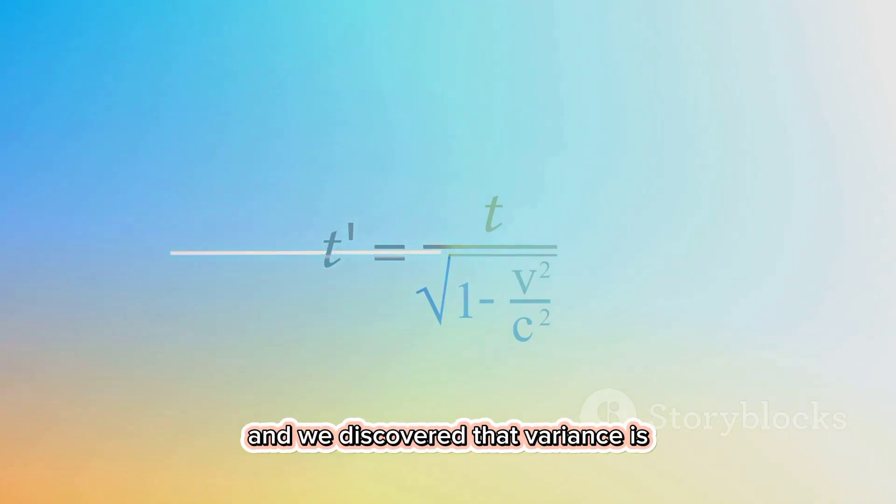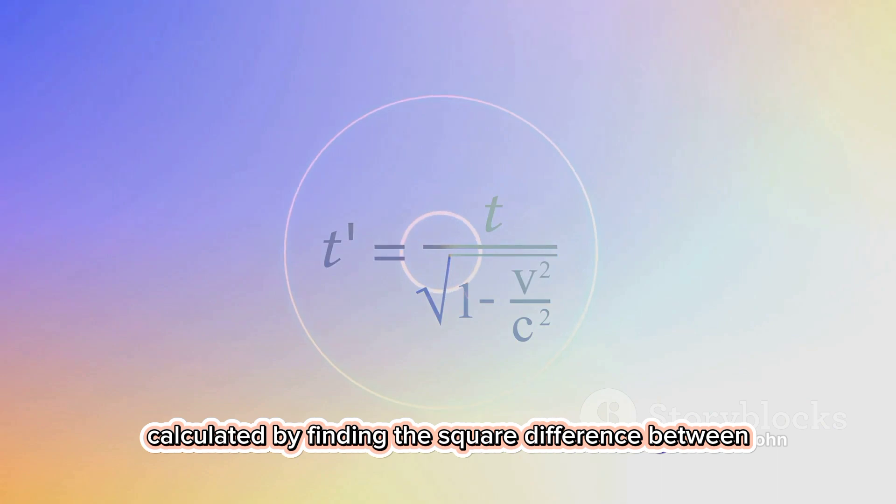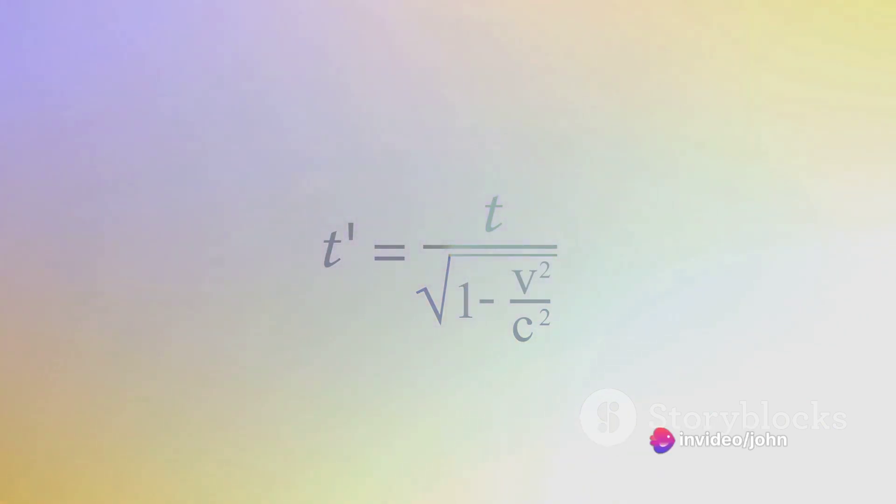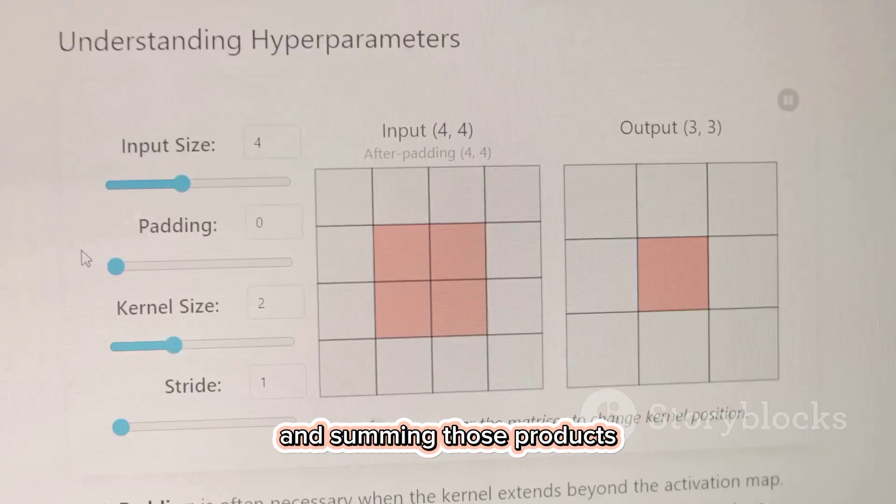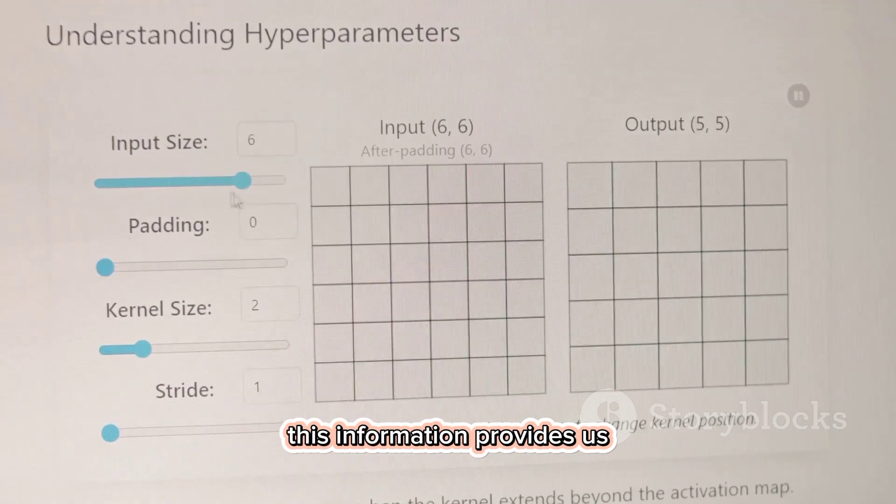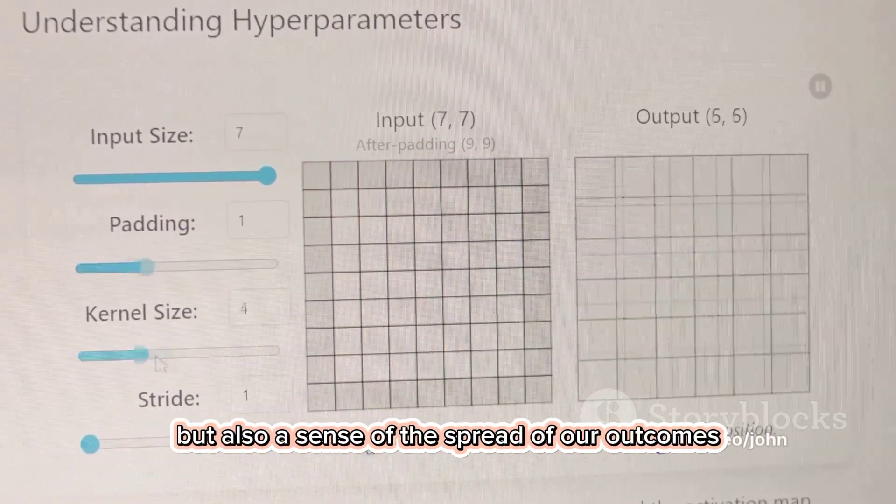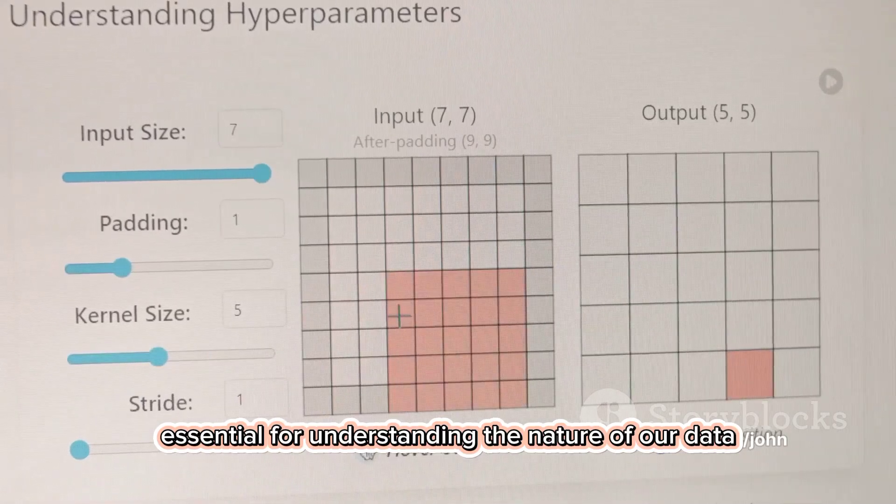And we discovered that variance is calculated by finding the square difference between each data point and the mean, multiplying each square difference by its probability, and summing those products. This information provides us not only with an average value, but also a sense of the spread of our outcomes, essential for understanding the nature of our data.